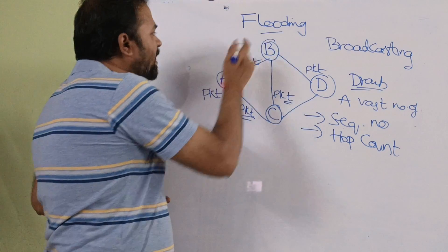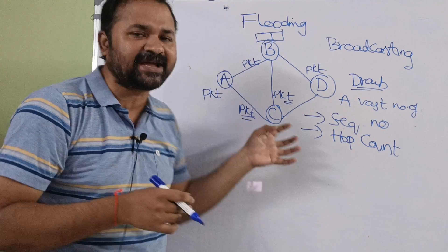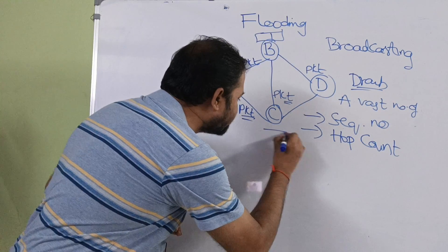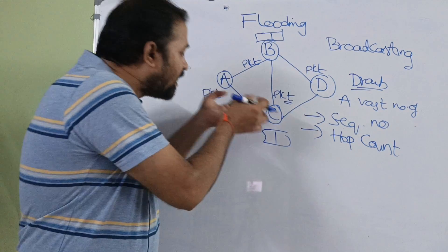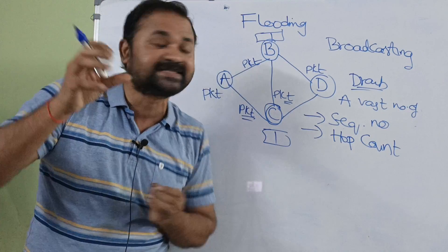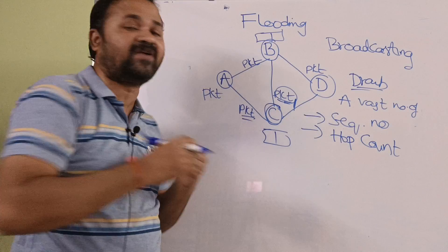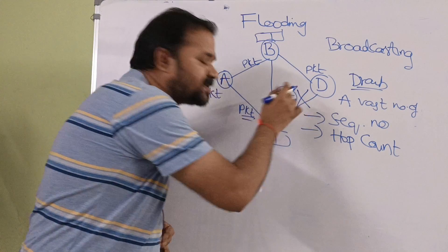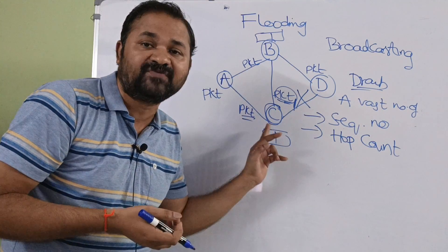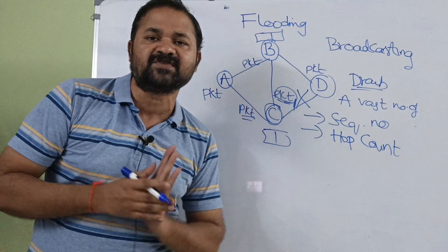With the sequence number approach, let A's packet have sequence number 1. A broadcasts the packet to its neighbors, so B has a packet with sequence number 1 and C has a packet with sequence number 1. When C then receives another packet from B, that packet also has sequence number 1. Whenever C receives a packet with a sequence number it already has, it simply discards that packet, because the information is already available. That's why it rejects the duplicate.